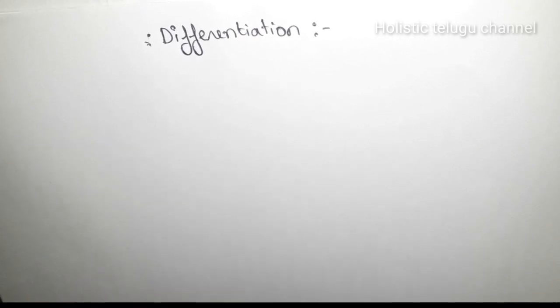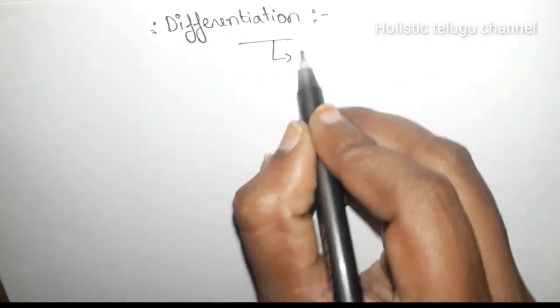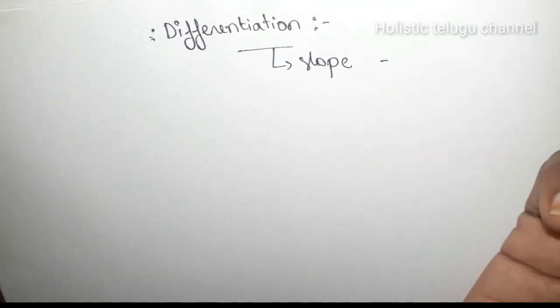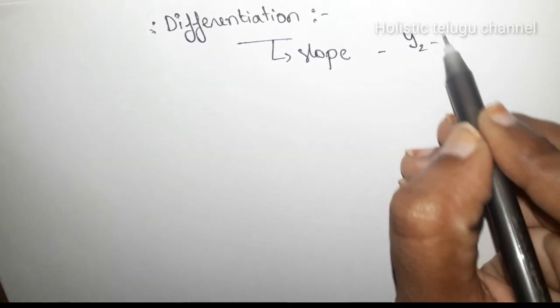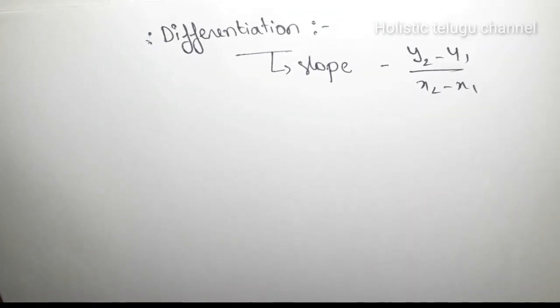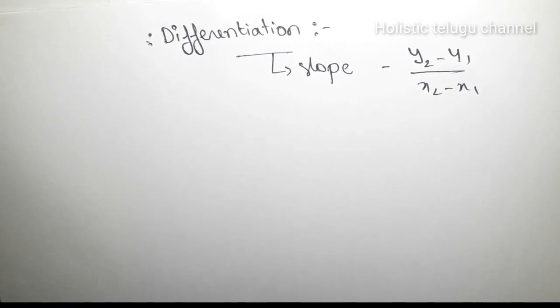So differentiation is a very difficult topic — so simple. Differentiation is nothing but a slope. Slope is y2 minus y1 by x2 minus x1. This slope is about a very different topic. Differentiation is similar to this. All of these things are important — this differentiation is step by step.